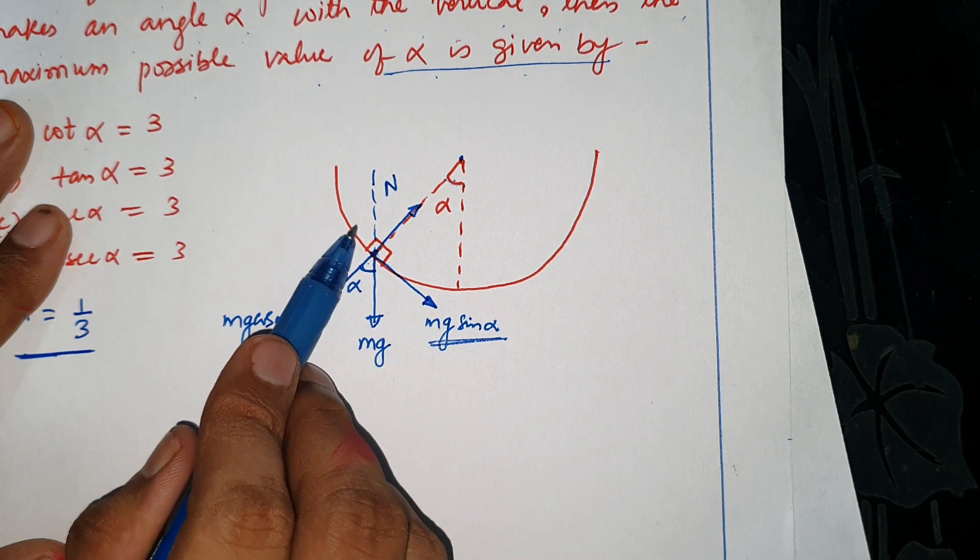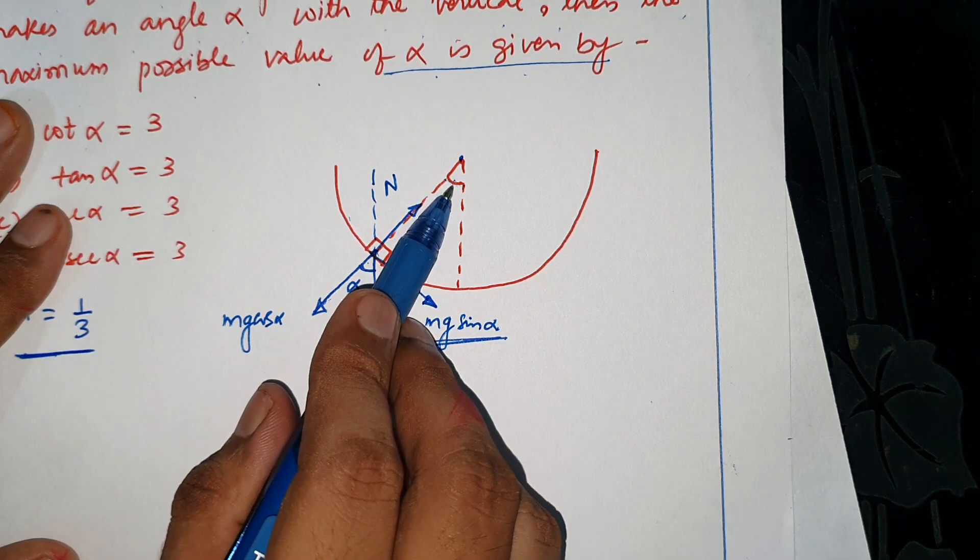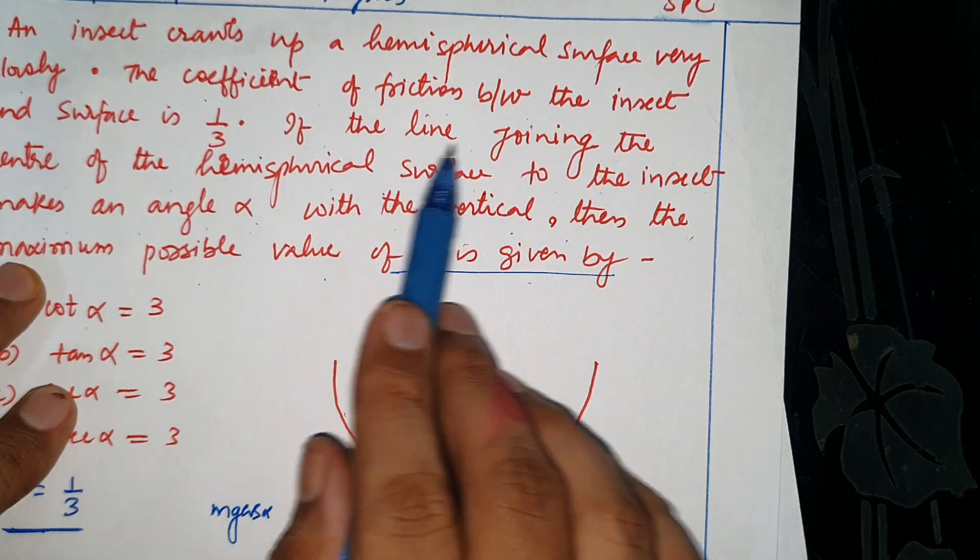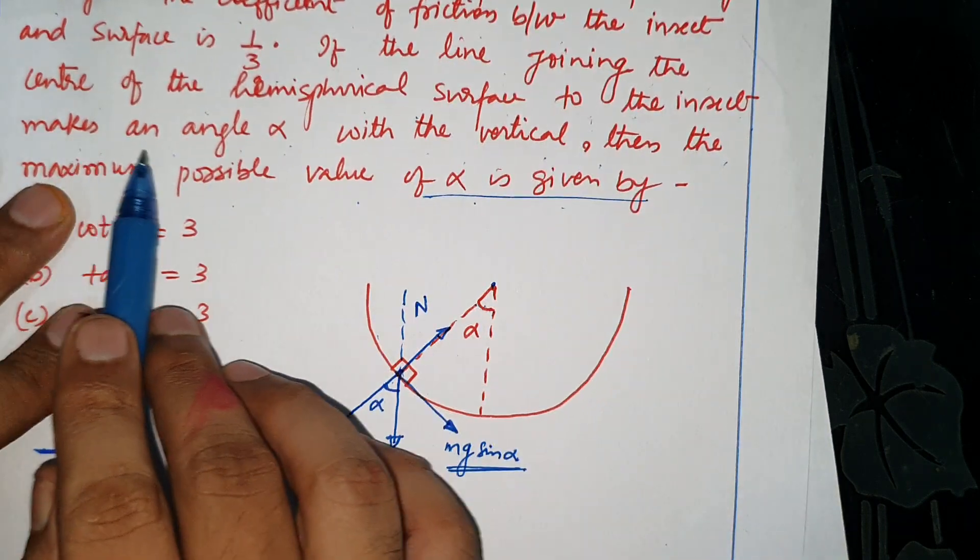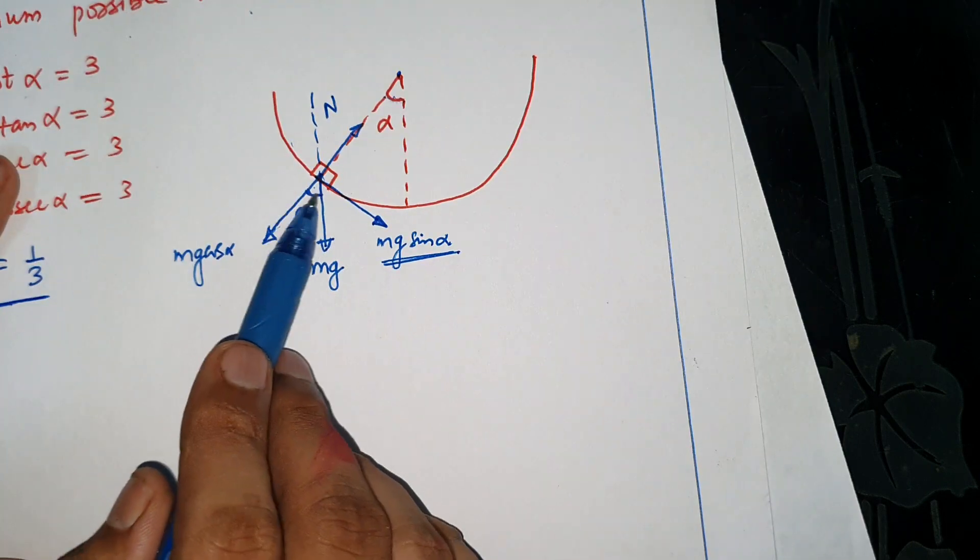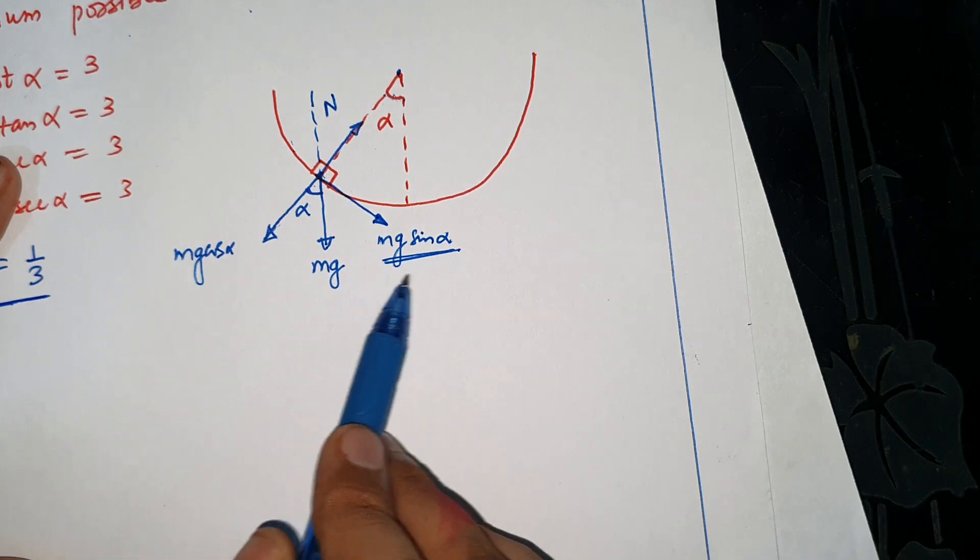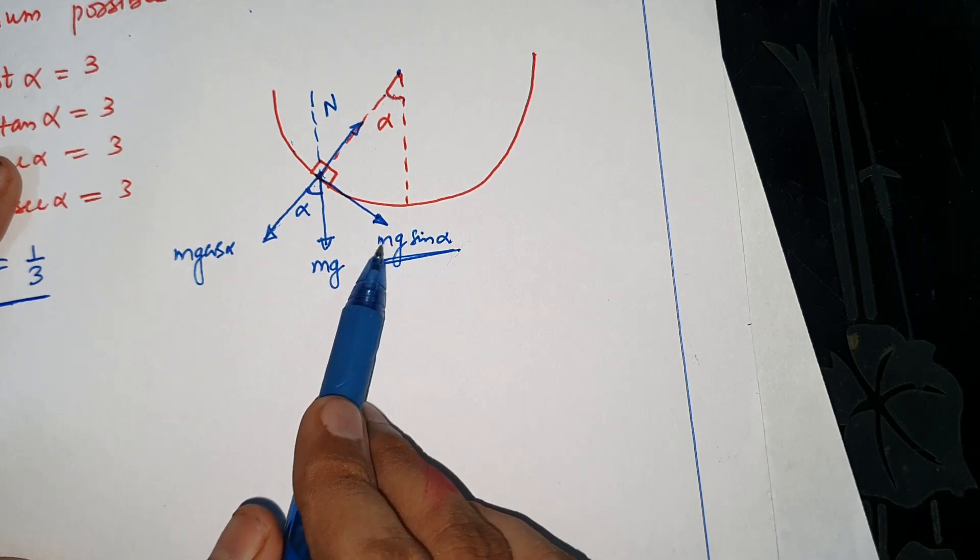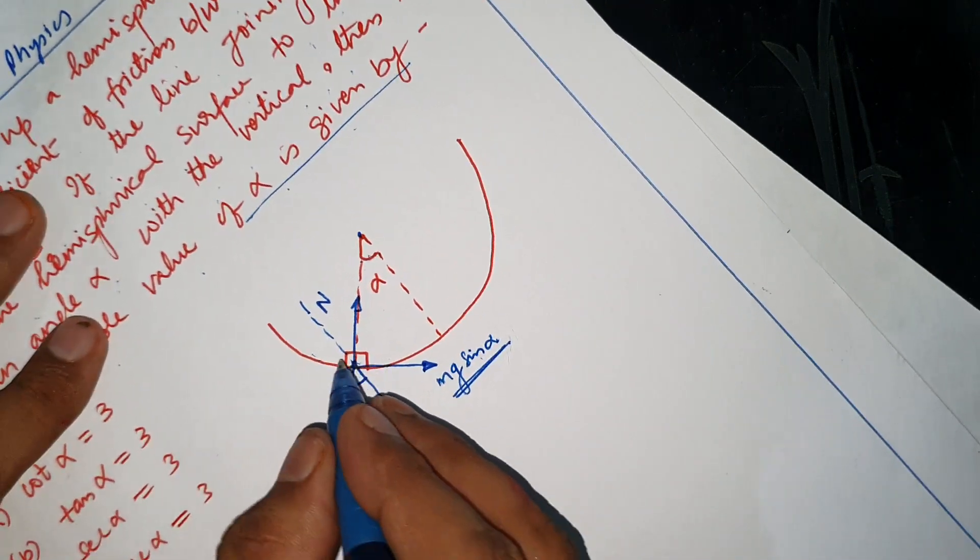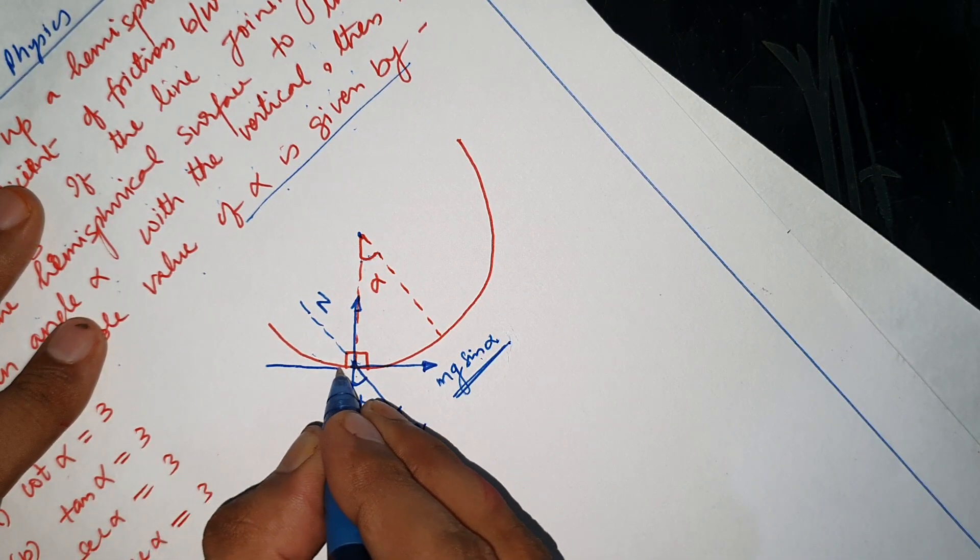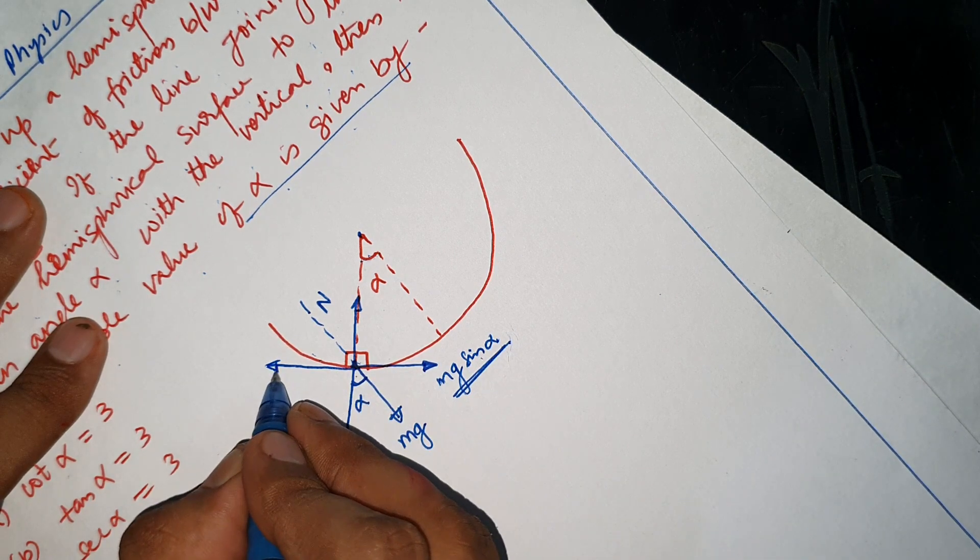Just as the insect goes up, alpha will increase. Line joining the center of the spherical surface to the insect makes an angle alpha with the vertical. So, just as the insect goes up, alpha will increase. And when alpha increases, mg sin alpha will increase. You know when it goes up to the maximum, this is the limiting friction.